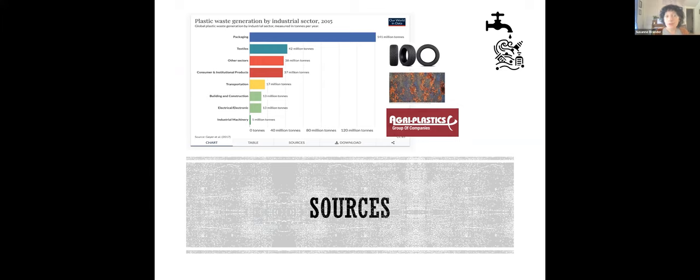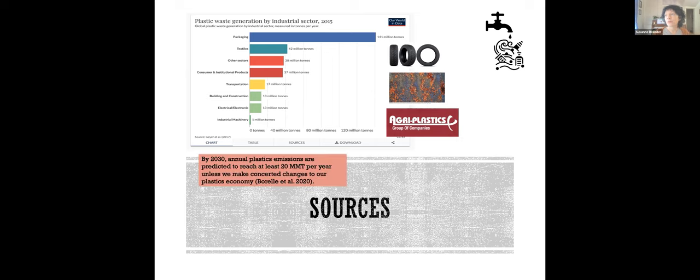So kind of the more we dig into this problem, the more challenges we find. We're not going to run out of things to do. And thinking about sources, they're also a bit more complex than we think. Packaging is the biggest source. If you've ever ordered packages from Amazon, you know, they come with ridiculous amounts of bubble wrap and unnecessary packaging. So that's a huge challenge. But textiles, which I think is something we maybe don't think as much about when it comes to plastic pollution, are the second biggest source. And really, we're at a point where we need to kind of turn off the tap or at least stem the tide, because we know that by 2030, which isn't very far away, annual plastics emissions are predicted to reach at least 20 million metric tons per year, unless we make concerted changes to our plastics economy.